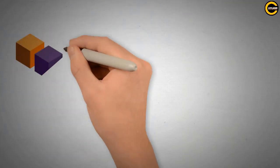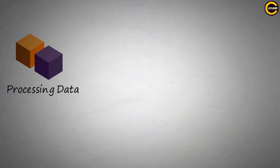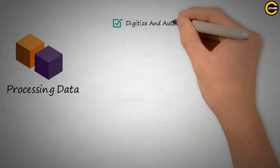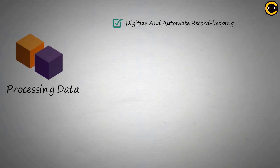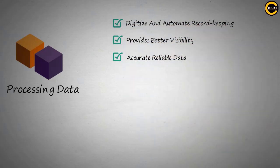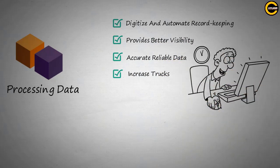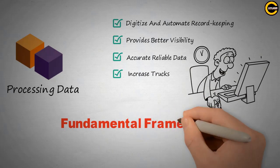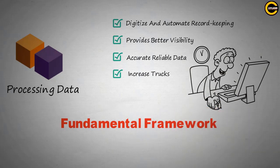Blockchain technology can also be used in processing data across a network. It allows industries to digitize and automate record-keeping. It provides better visibility, more accurate and reliable data, and increased trust amongst participants and the network. Despite blockchain being a relatively new concept, it provides a fundamental framework for any industry that is involved with data and transactions.